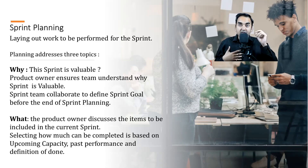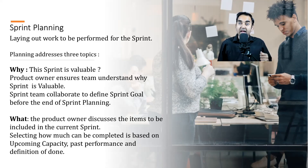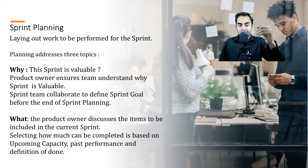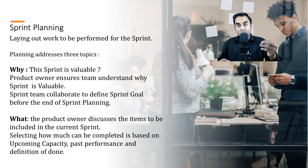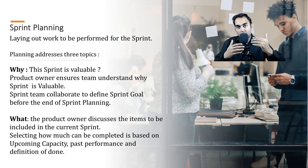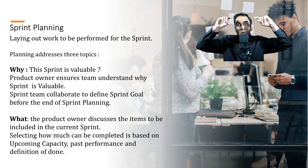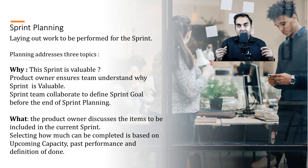The product owner answers why we should take a specific feature and what the ultimate goal is for this sprint. The product owner ensures the team understands why the sprint is valuable, because once they understand it, it becomes easier to overcome any obstacle. The scrum team also collaborates to define the sprint goal before the end of sprint planning, so you should leave knowing not just the list of items but also what you're trying to achieve.